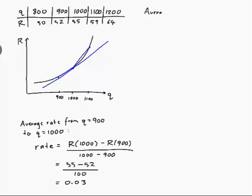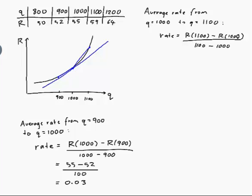Now let's do the average rate from Q equals 1000 to Q is equal to 1100. This time the rate is equal to R of 1100 minus R of 1000 divided by 1100 minus 1000, and that's equal to... Well, 1100 gives me 59, 1000 gives me 55, divided by 100, so that's 4 on 100, so that's 0.04 this time.